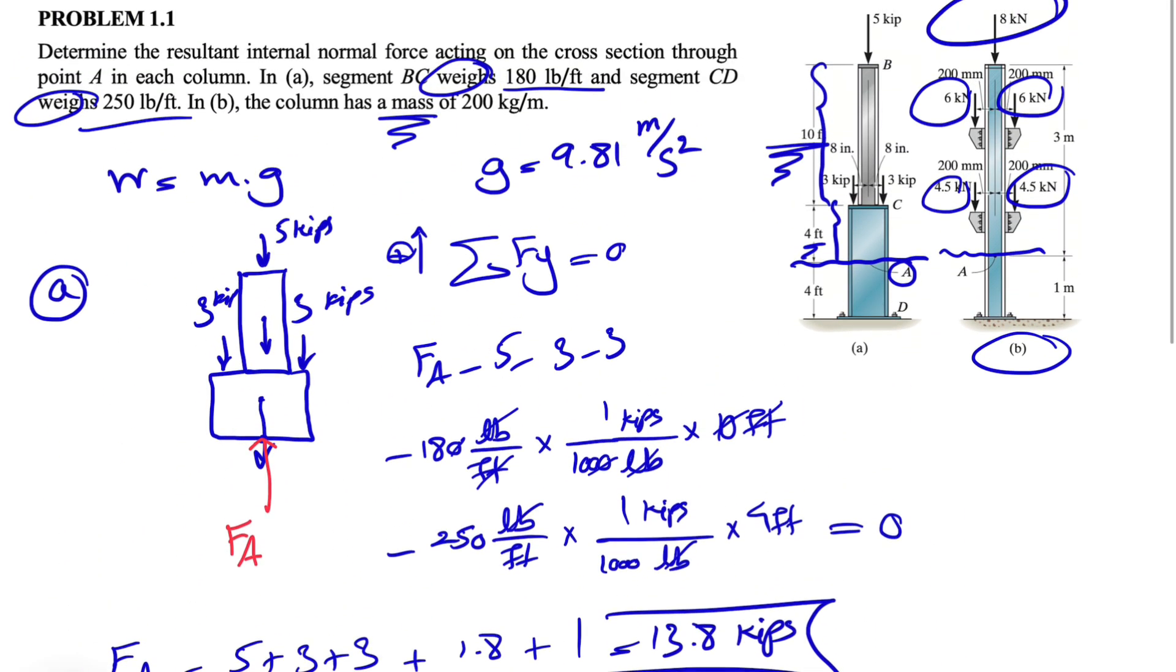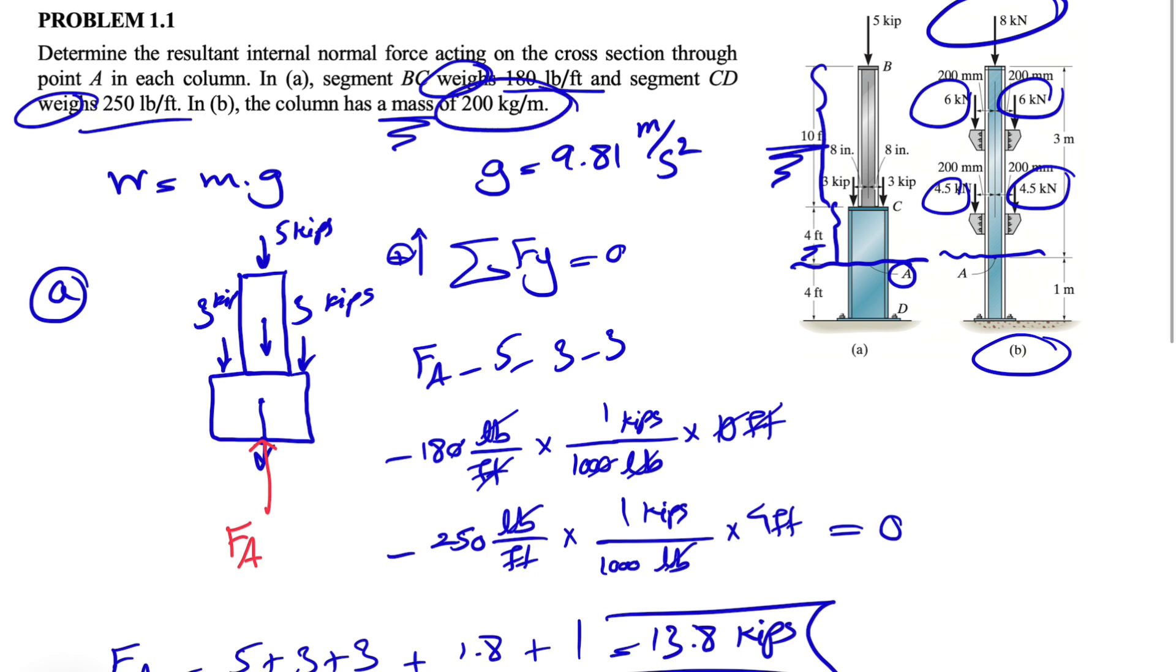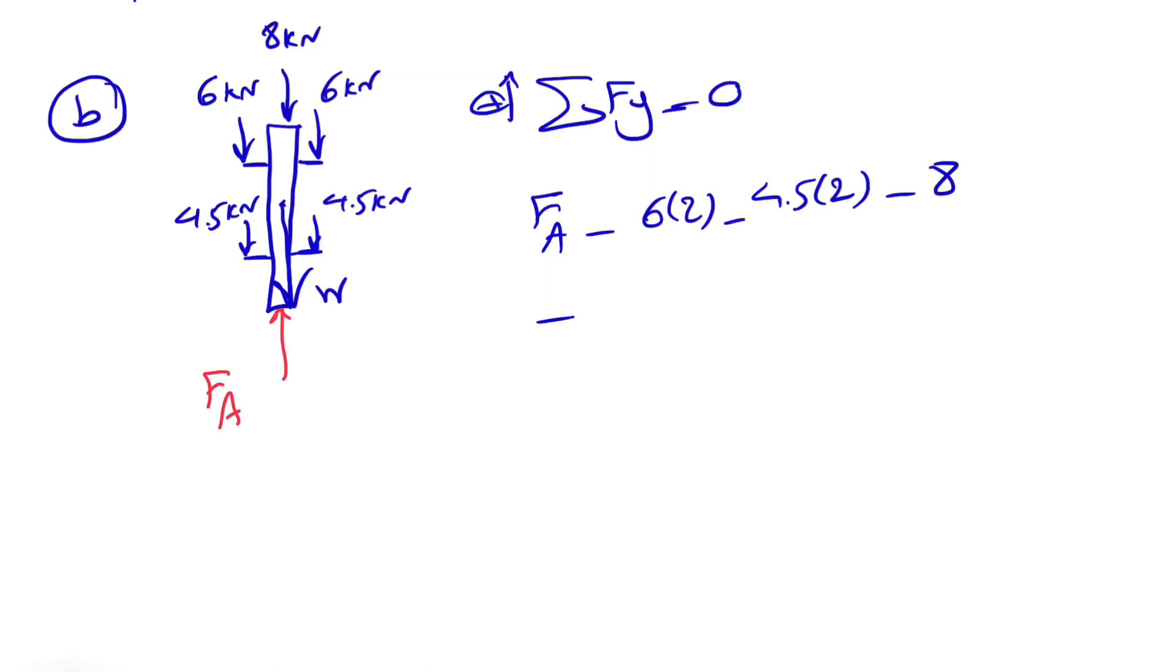And the last one is the weight. If we get back, as I mentioned at the beginning, we have the mass and we're looking for the weight. So we have 200 kilograms per meter, and we're going to multiply that by g to get our weight.